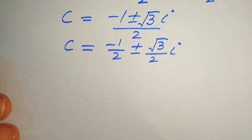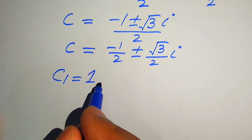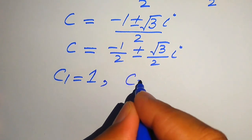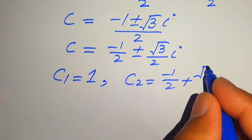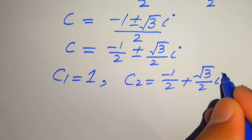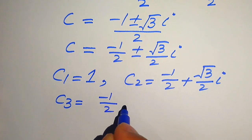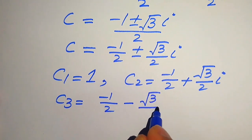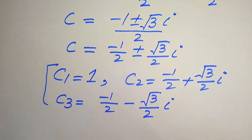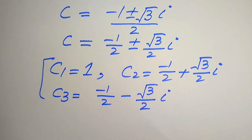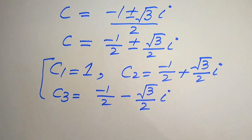Breaking the fraction, we write the three roots of the given equation. The first root is c₁ equals 1. The second root is c₂ equals minus 1 over 2 plus square root of 3 over 2 times iota. The third root is c₃ equals minus 1 over 2 minus square root of 3 over 2 times iota. These are the three roots of the given equation, and this is the final answer. Thank you for watching, please subscribe for more videos.